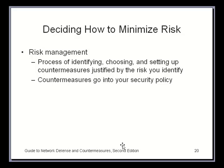Risk management is the process of identifying, choosing, and setting up countermeasures justified by the identified risks. We can reduce and manage risk, but we can't completely eliminate it. Countermeasures include firewalls, intrusion detection systems, encryption, access controls for particular files, and even physical access controls — your servers should never be sitting in a room that everybody has access to; they should be physically secured.